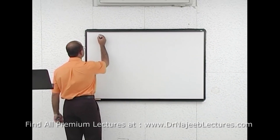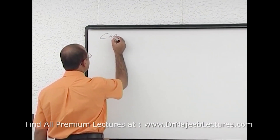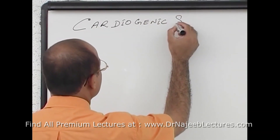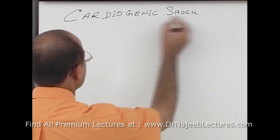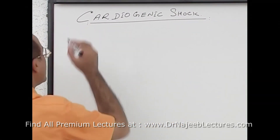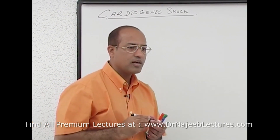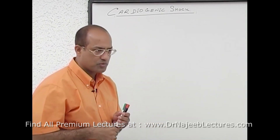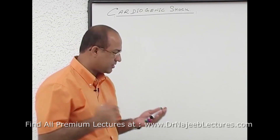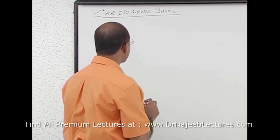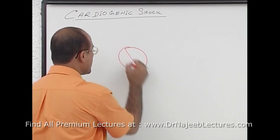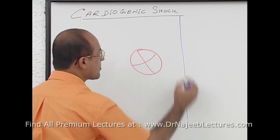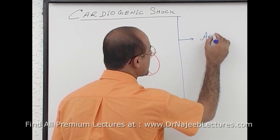We will be discussing the main causes of cardiogenic shock. In cardiogenic shock, the main problem is that the heart is unable to produce enough cardiac output — the problem is not with the volume or the capacity. We have to see why the heart is unable to produce enough cardiac output. One reason could be arrhythmias.